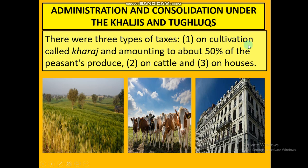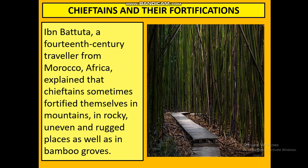There were three types of taxes. The first was on cultivation, known as Kharaj, which was about 50% of what the peasants produced — meaning if earning 100 rupees per year, 50 rupees had to be handed over to the ruler. The second tax was on cattle, and the third was on houses — the more magnificent a building, the more money one had to pay to the ruler.